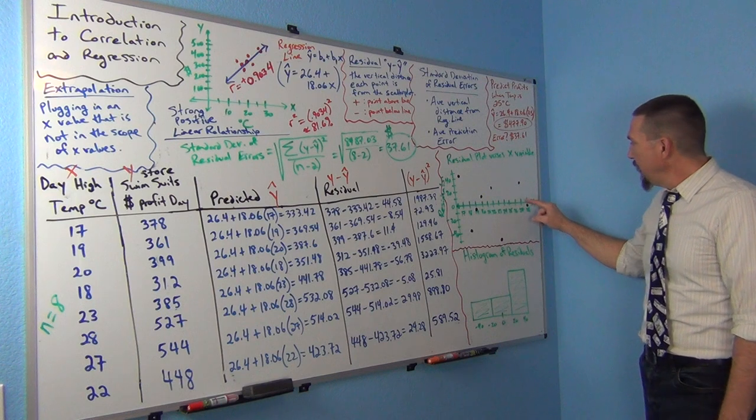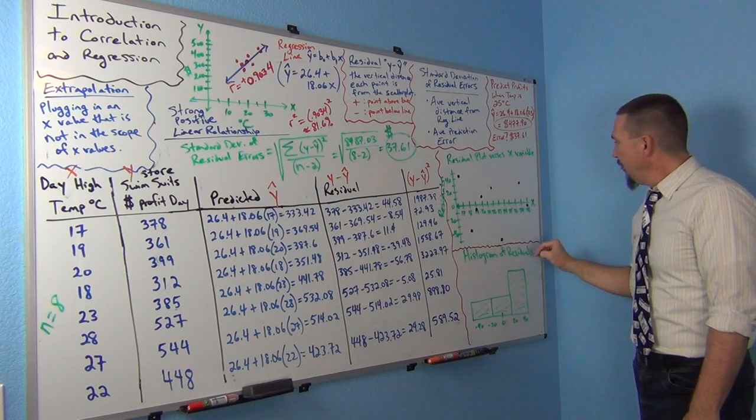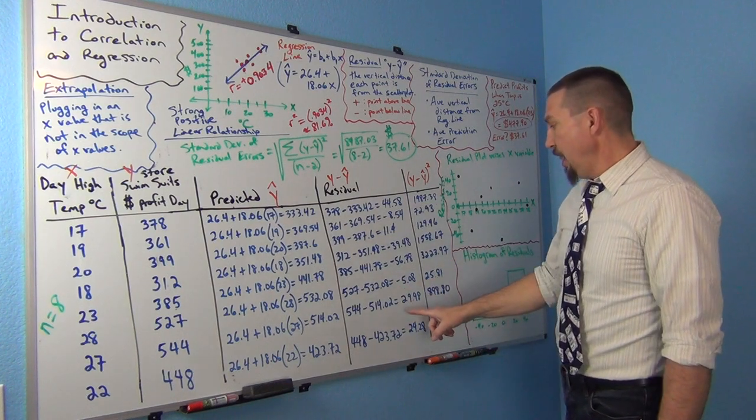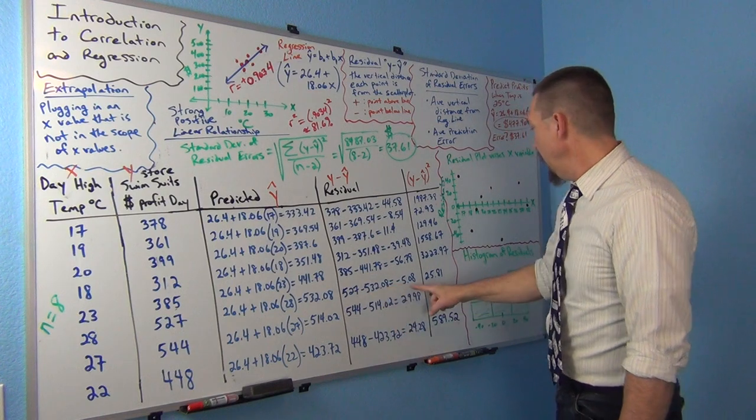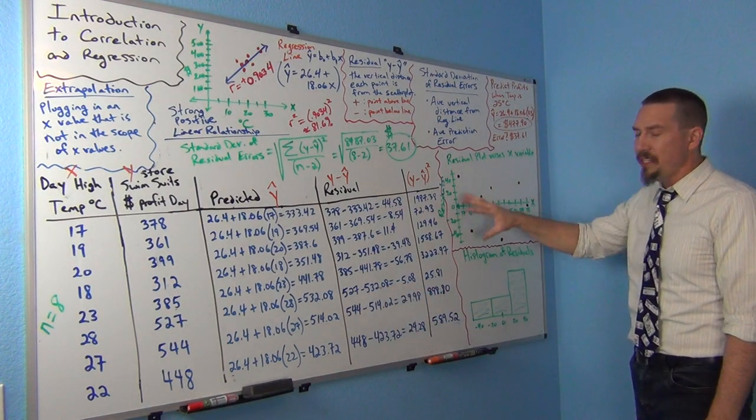So that would be right here, 29.98 is right above. And then, at 28 we had a residual of negative 5. So here's negative 5. So you can kind of see this is called a residual plot.